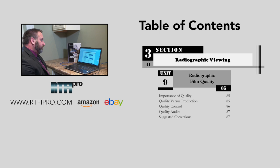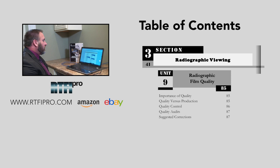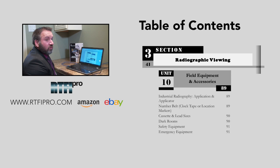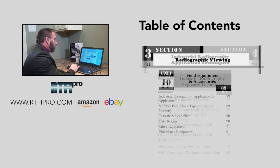We address why failures happen in the dark room. Unit nine covers radiographic film quality: importance of quality, quality versus production, quality control, quality audits, and suggestive corrections — very important today given all the audits. Unit ten covers field equipment and accessories: materials and equipment, industrial radiography applications and applicators, number belt, clock tape or location markers and how to build them, cassette and lead size, dark rooms, safety equipment, and emergency equipment. That finishes section three.